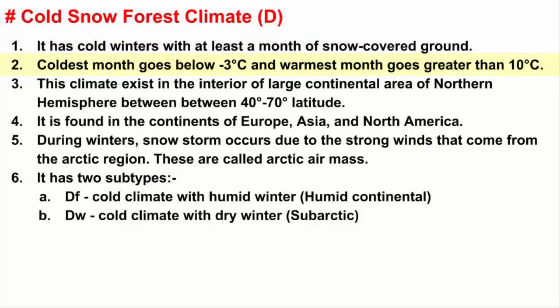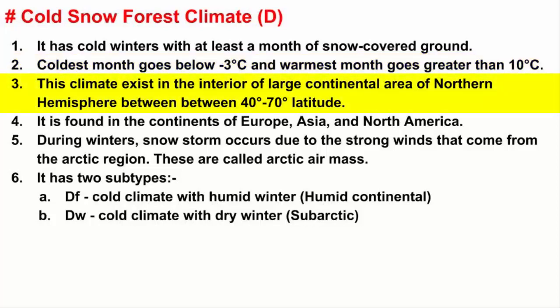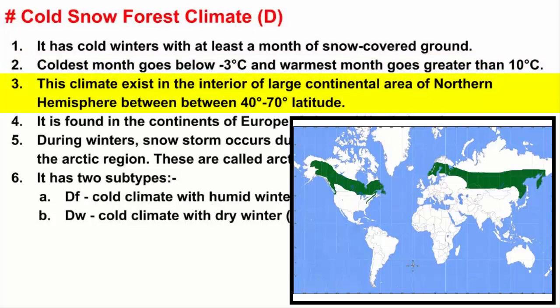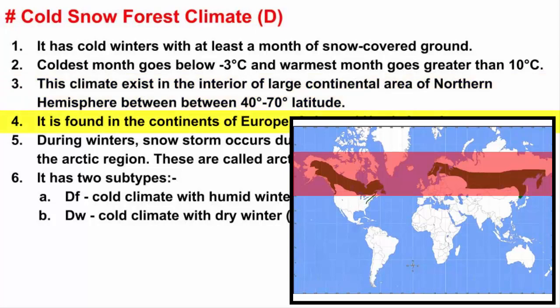The temperature of the coldest month can go less than minus 3 degrees Celsius, and the temperature of the warmest month can go greater than 10 degrees Celsius. Cold Snow Forest Climates occur in the interior of large continental areas in the Northern Hemisphere, between 40 and 70 degrees north latitude in Europe, Asia, and North America. The reason it is only in the Northern Hemisphere is because the Northern Hemisphere has more land mass compared to the Southern Hemisphere.